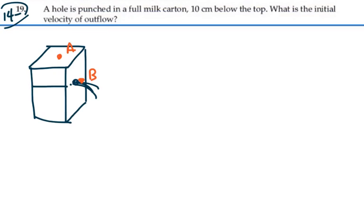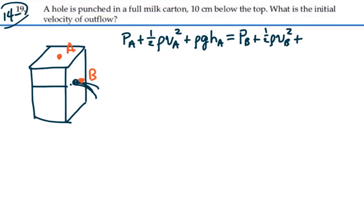Which means that the absolute pressure at point A plus one-half the density times the velocity at point A squared plus the density g times the height of point A is equal to a constant. So that's equal to the absolute pressure at point B plus one-half the density velocity at point B squared plus the density times g times the height of B. Bernoulli's equation.